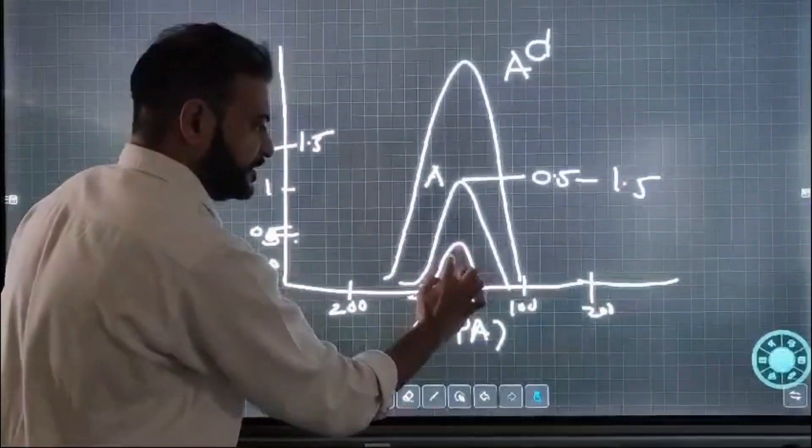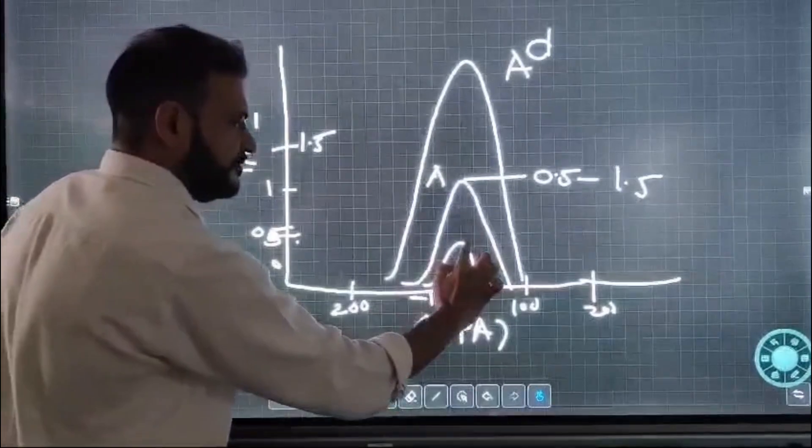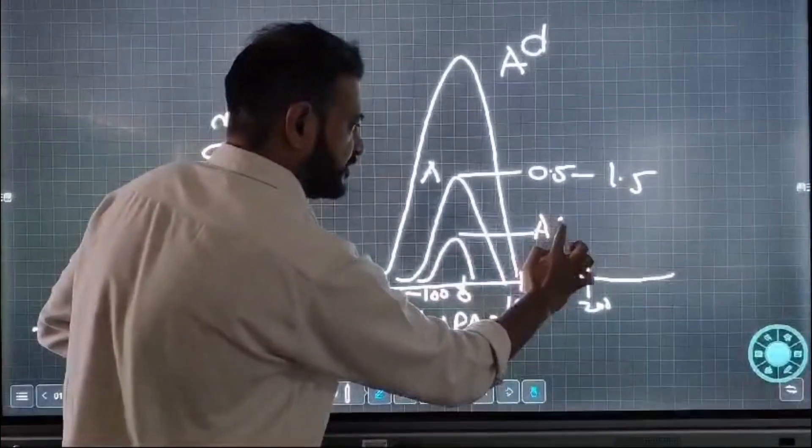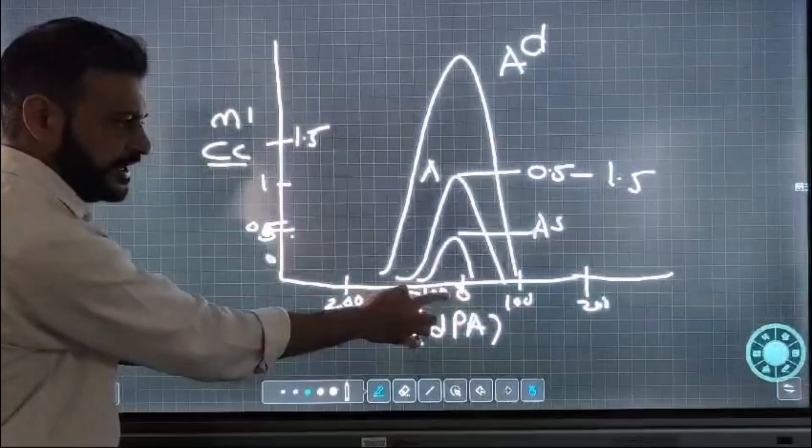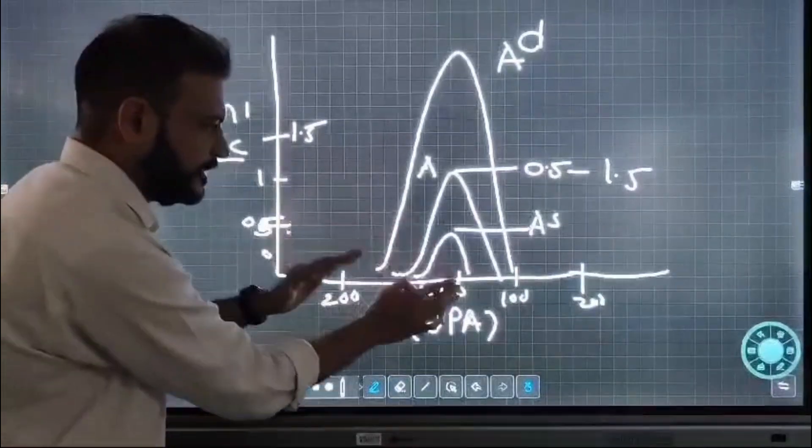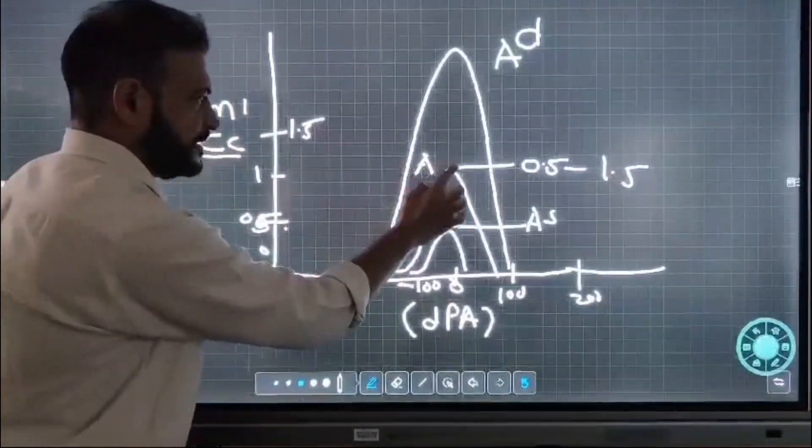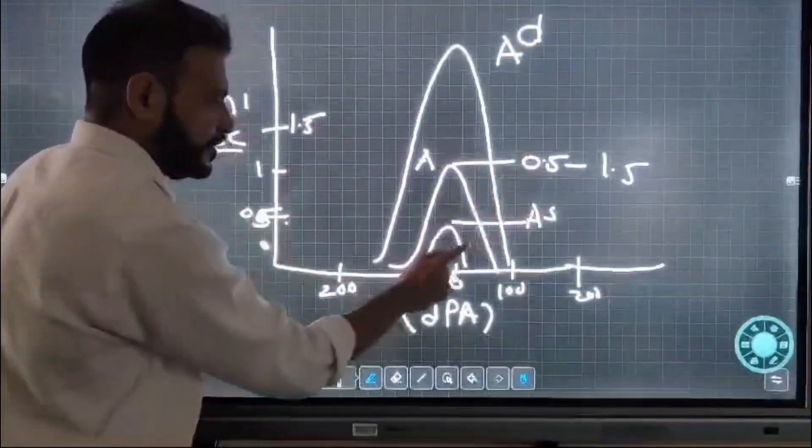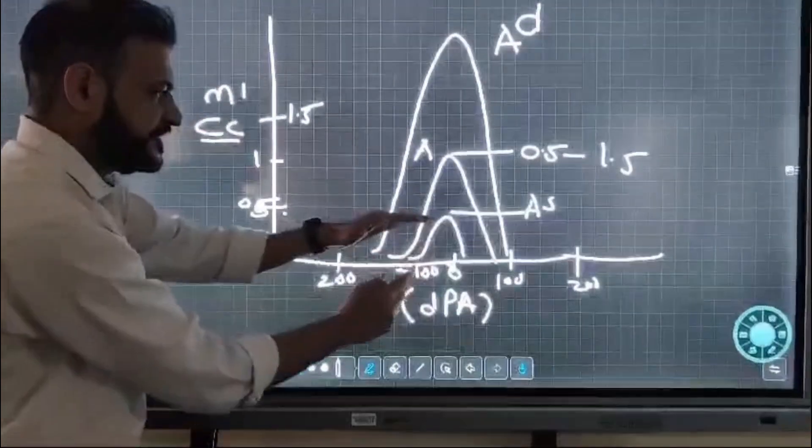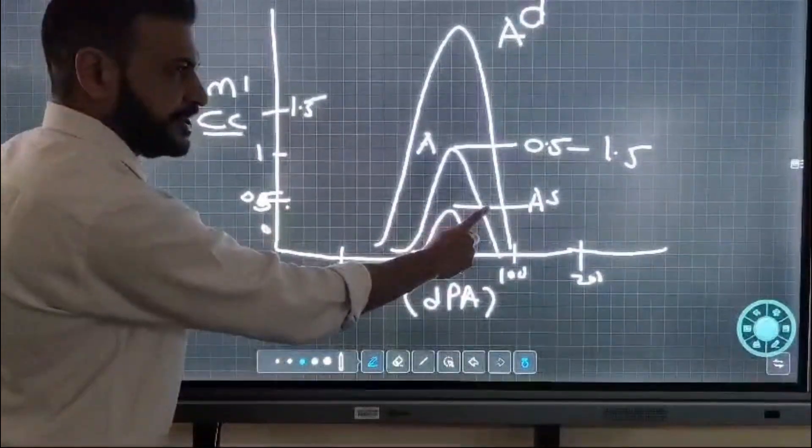Third, if the height of the curve is small, we call it a Type As curve, where the compliance is less at normal pressure. If the compliance is less, it is an As kind of curve.